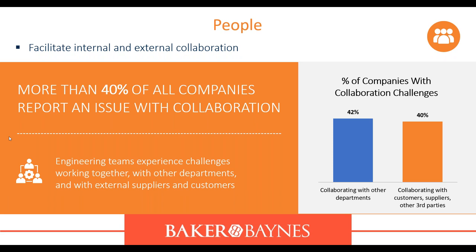Questions to ask: Are your engineers able to work together effectively? How easy is it for your engineering team to collaborate with other departments such as manufacturing, purchasing, and sales? Can you easily share data and information with outside suppliers and customers? What do you think the impact of these collaboration issues is — does it slow down product development or result in errors late in development? How much time do your engineers waste, and are engineers in different sites able to access data equally?